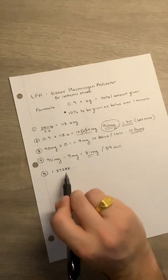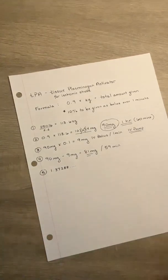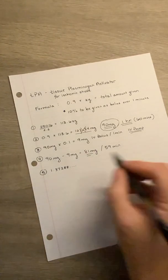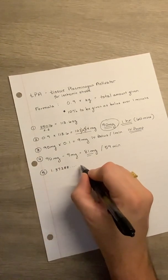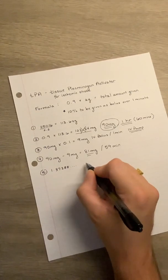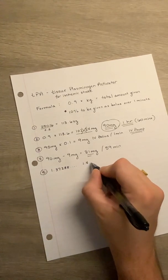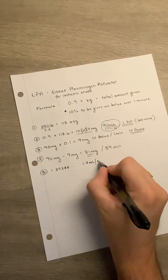Once we have this number, that's how much we must give per minute to give this 81 milligrams over 59 minutes. So if the problem is asking for how many milliliters per minute you're going to set for, then here's your answer. You would round this up, and it would be 1.4 milliliters per minute.